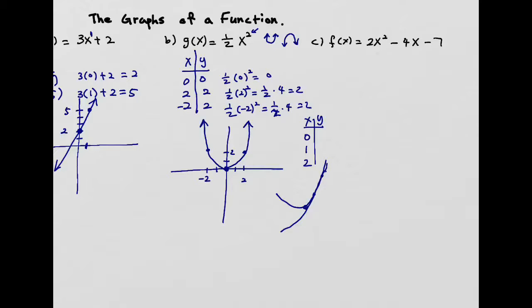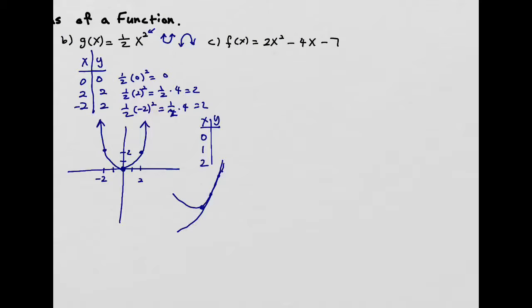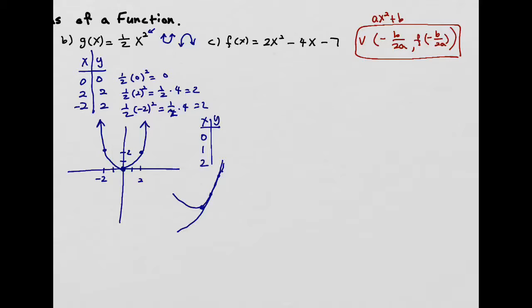The first thing you need to know is how to find the vertex. We have a formula: the x-value of the vertex is negative b over 2a. Once you find that, replace it back into the function to find the y-value. In standard form, a quadratic is ax squared plus bx plus c, where the leading coefficient is a, the second coefficient is b, and the constant is c.